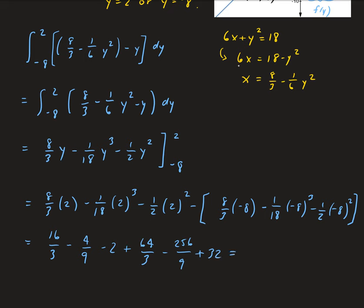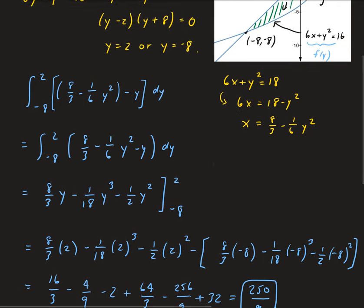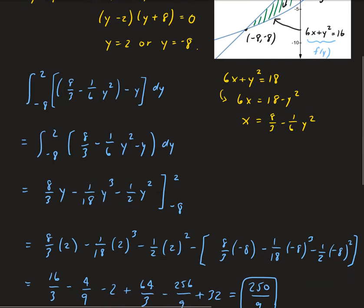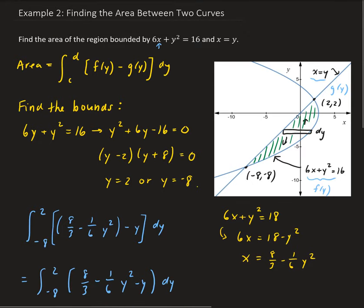Combining all terms gives us 250 over 9, which is the area of the bounded region shown in the figure. To recap: when functions are expressed in terms of y, we always take right minus left, set up the integral with bounds in terms of y, and take the difference of the functions.